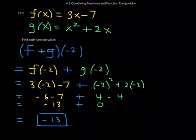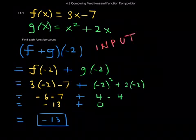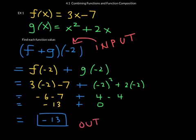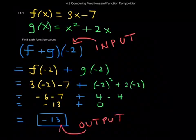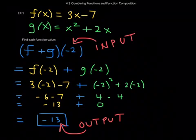you can see we were given function f and function g. We had to find the function value of this function, f plus g, when the input is negative 2. Now, I just want to remind you that negative 2 is your input. It's what you plugged in. And negative 13 is the output, or we like to call the function value. I'm going to give you another example using function f and function g again, but I'm going to have you find something else.